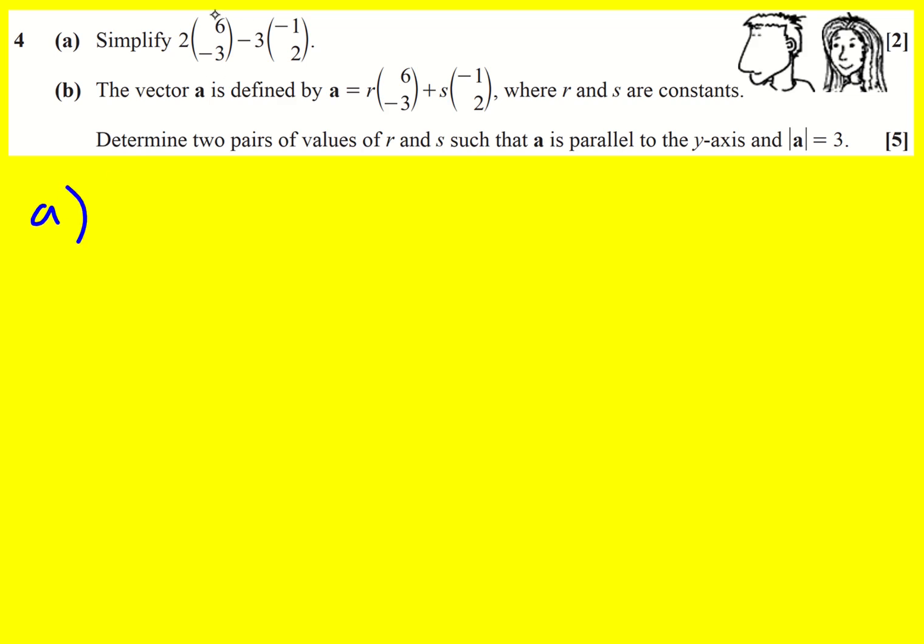In this first part of this question, we're asked to simplify this vector expression. If I'm doubling the vector, I double the x value and the y value. I'm going to subtract triple of (-1, 2), so I triple -1 and I triple 2.